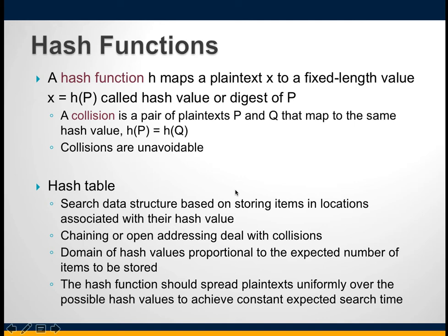A collision is a pair of plaintexts that map to the same hash value. Two different messages may produce the same hash digest, and collisions are unavoidable. The hash function H can be applied to a block of data of any size depending on the algorithm type, and it produces a fixed length output. The hash is relatively easy to compute for any given plaintext, making both hardware and software implementations practical. Generally, the computation time should be proportional to the length of the input.